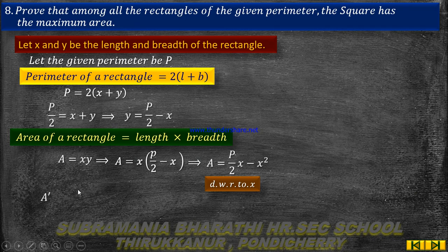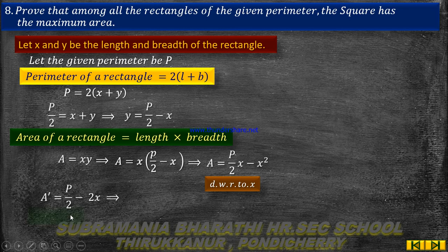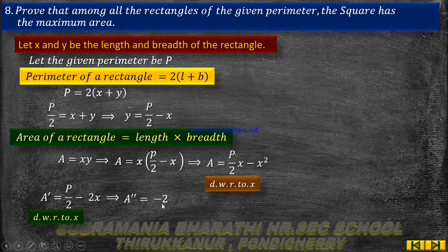Differentiating A with respect to x: dA/dx = P/2 - 2x. Differentiating again: d²A/dx² = -2.